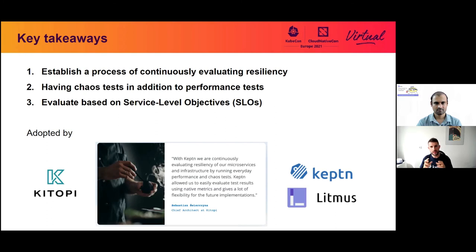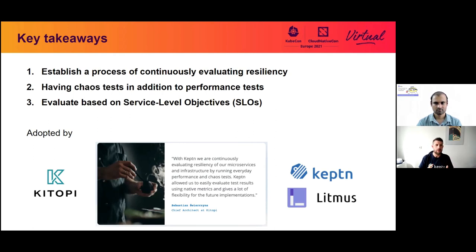We want to leave you with three key takeaways. First, establish a process of continuously evaluating resiliency — not just once or twice on a game day, but putting continuous resilience evaluation into your CD pipelines with chaos tests in addition to performance tests. Second, evaluation should be based on service level objectives — they have proven to be a very efficient way to evaluate both performance and resilience criteria. You can include memory consumption and other metrics in your SLOs, and combining many SLOs gives you a very strong quality indication of your applications.